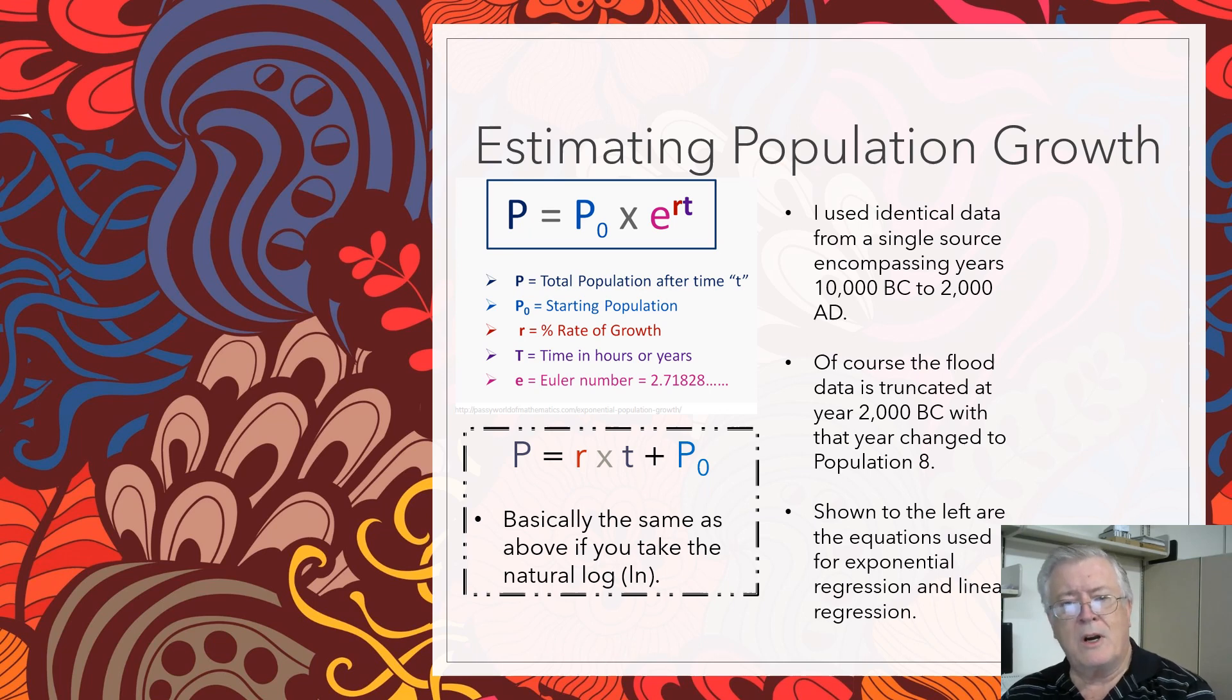An exponential growth curve is that top part there. P equals P₀ times e to the rt. That x there means times. I don't know why they used an x, but they did. So P equals P₀e^rt. And you can see P₀ is the starting population. e to the rt, r is the rate of growth, and t is time in years. So the two variables that we're trying to estimate are P₀ and r.